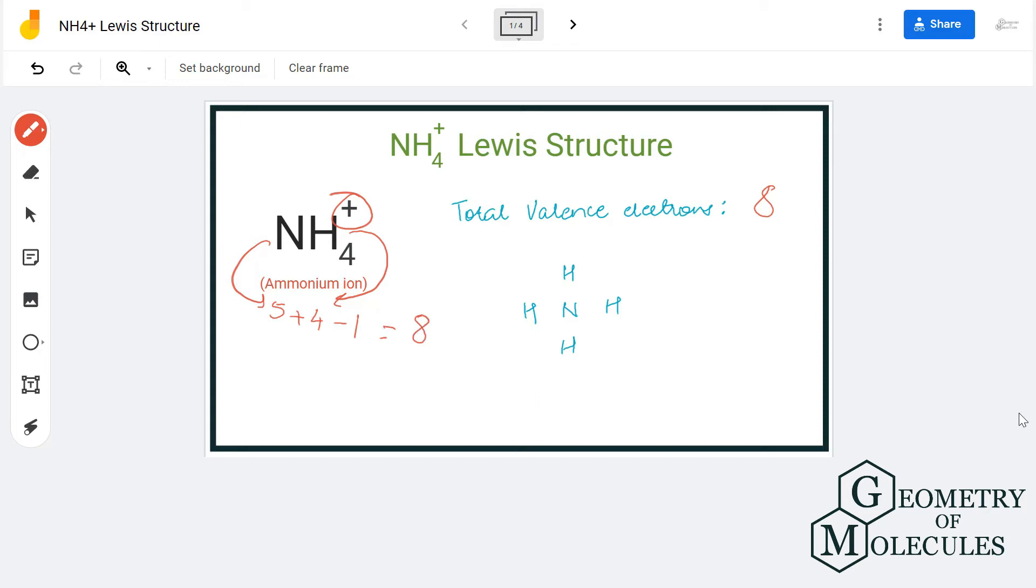The nitrogen atom will take the central position, as hydrogen atoms do not take the central positions and are placed around the central atom. So the four hydrogen atoms will be placed around the nitrogen atom like this.